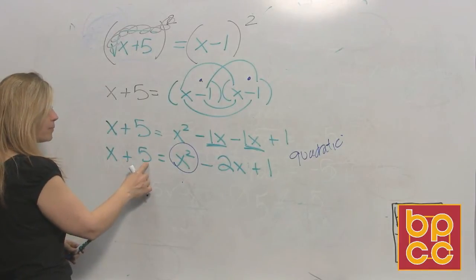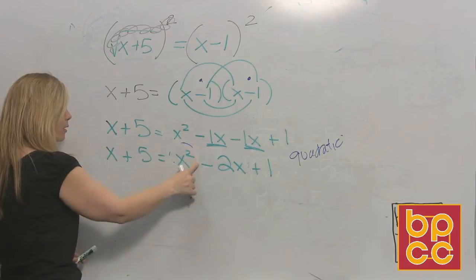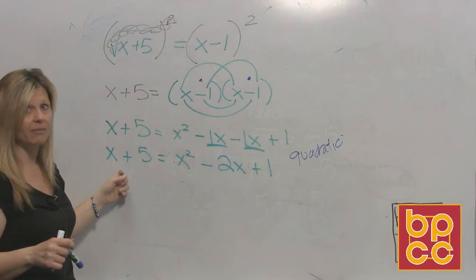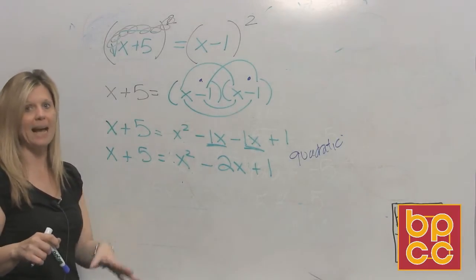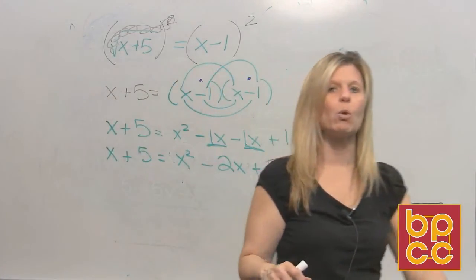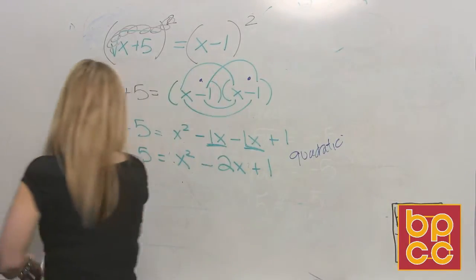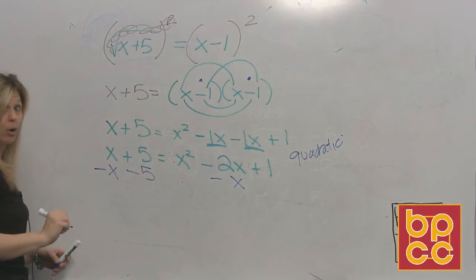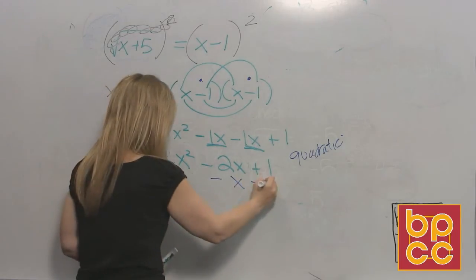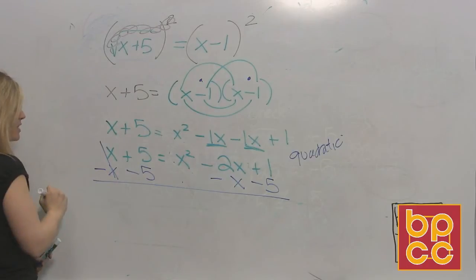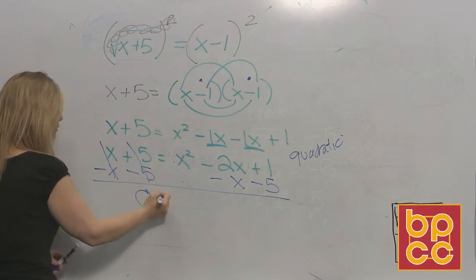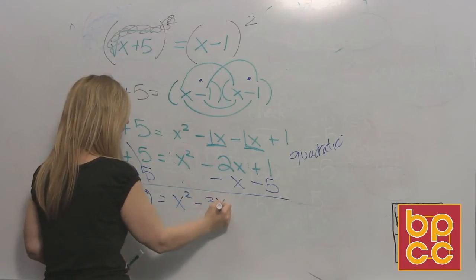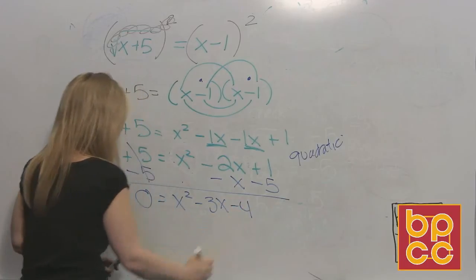So to set this equal to zero, I'm going to move the x plus five. Why is Ms. Black not going to move the x squared? Well, because we discussed this a long time ago. If you move the x squared to the left, it's going to become negative. And you never want your x squared to be negative. In your quadratic equations, you always want your x squared to be positive. So we're going to move the x by subtracting it and we're going to move the five by subtracting it. So we can move them at the same time. So that'll cancel, give us zero. That'll cancel, give us zero. x squared. A negative two x and a negative one x is negative three x. Positive one minus five is negative four.